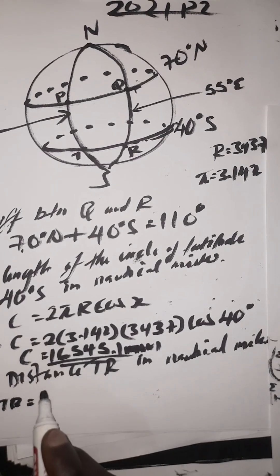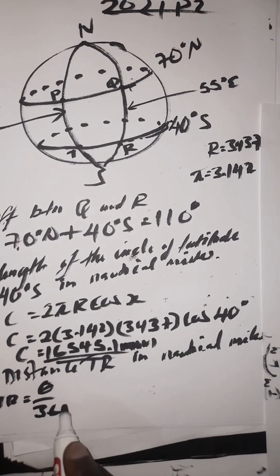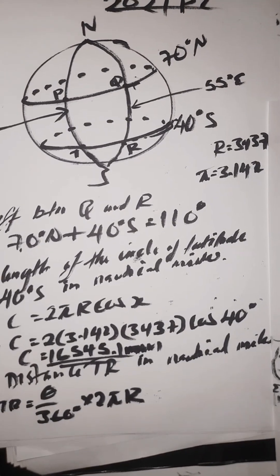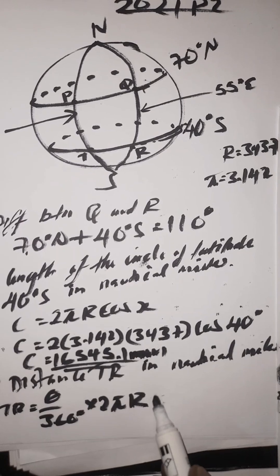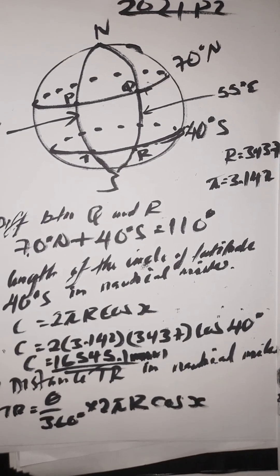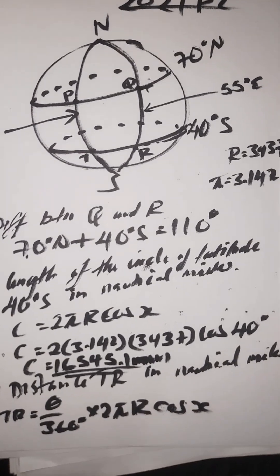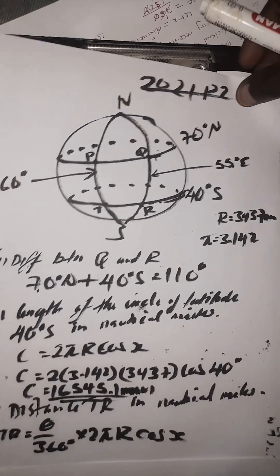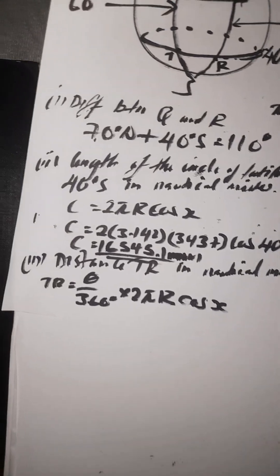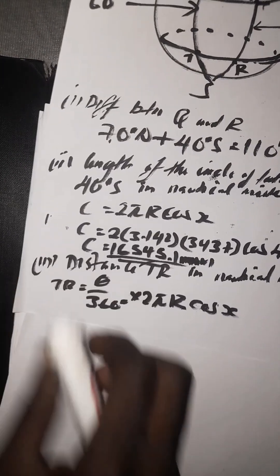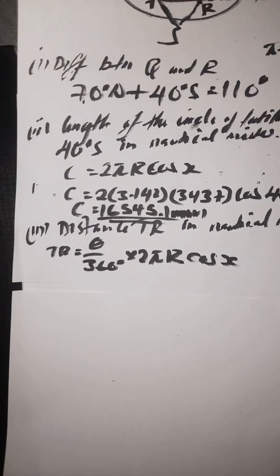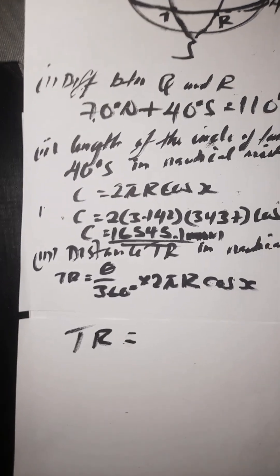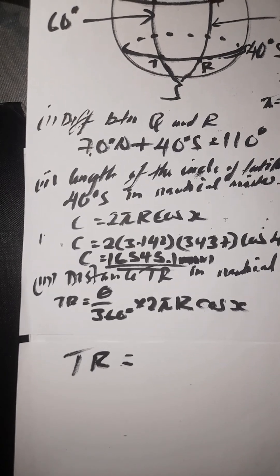The formula is: TR = (θ / 360°) × 2πr × cos(x), since this is the distance along the line of latitude, we include cos(x) in the formula.